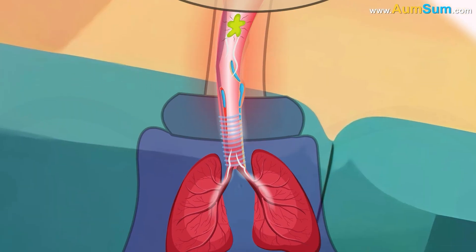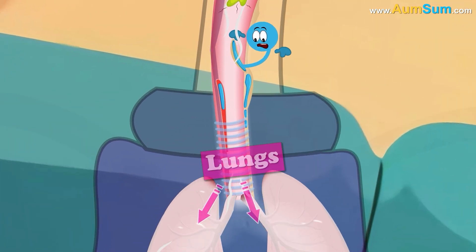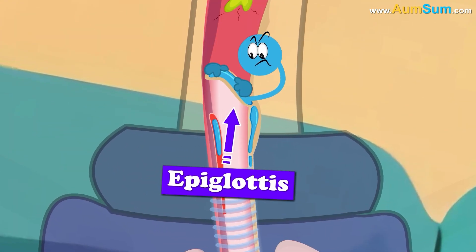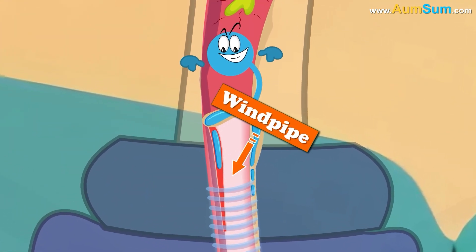First of all, we gasp in a large volume of air into our lungs. Next, our epiglottis closes, thus closing off the windpipe.